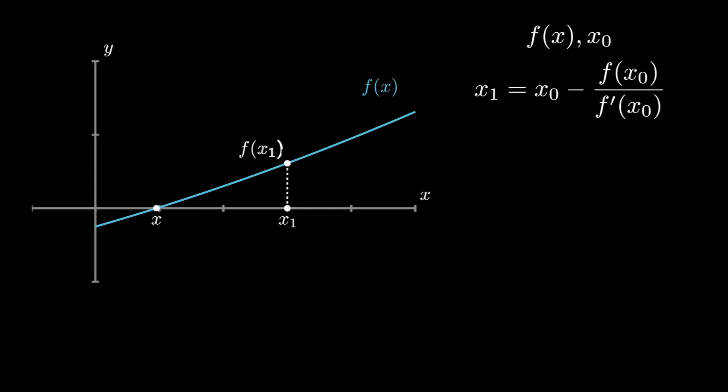Next, again we draw the vertical line to the graph from x_1 to get f(x_1). Next, draw the tangent line at this point to the curve. The point where the tangent line cuts the x-axis, let's call it as x_2.